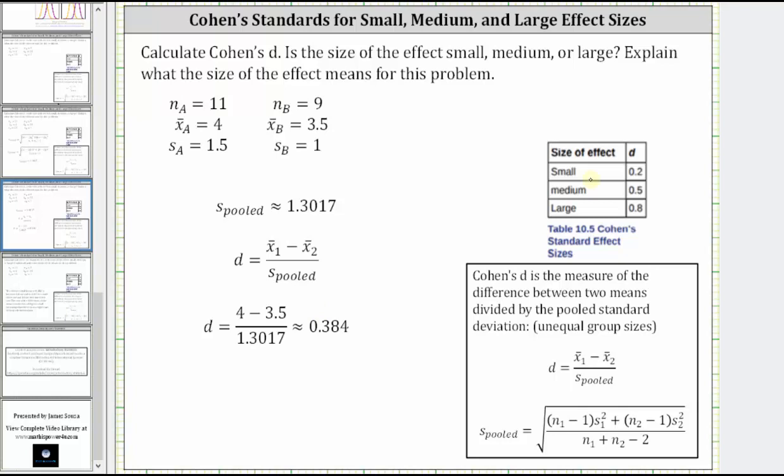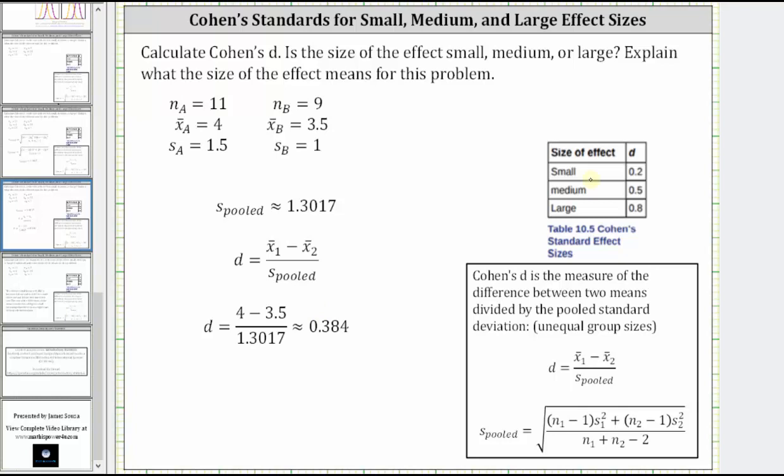Notice how this value is between the small and medium effect, and since it doesn't reach the medium effect, we will say the effect is small because 0.384 is between Cohen's value of 0.2 for small effect size and 0.5 for medium effect size. The size of the differences of the means is small indicating there's not a significant difference between them.